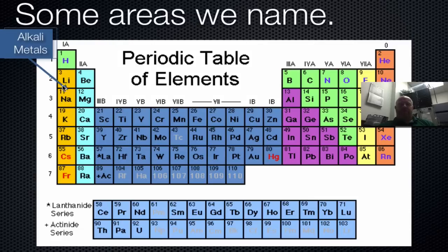The first group highlighted here does not include hydrogen — hydrogen is treated separately. The block from lithium down to francium is called the alkali metals. They have very similar properties because they have very similar electron configurations — they all end in S1. So lithium, sodium, and potassium all end with S1 in their electron configuration, meaning their properties are very similar. This whole group is called the alkali metals.